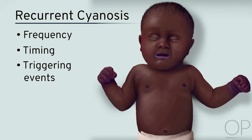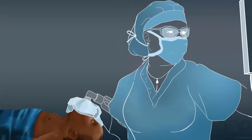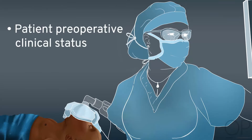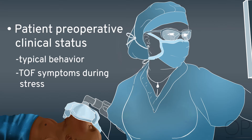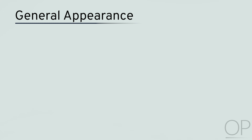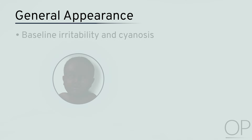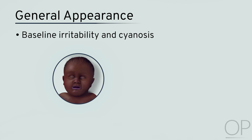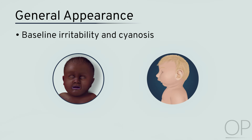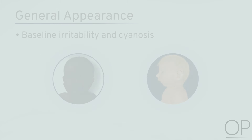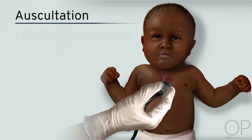Although echocardiography will provide the most comprehensive information about the nature of the cardiac defect, the anesthesiologist will need a clear picture of the preoperative clinical status of the patient, including typical behavior and Tetralogy of Fallot symptoms during stress and pain. During the physical examination, the general appearance should be assessed in regards to baseline irritability and obvious cyanosis. The facial features have to be carefully examined for any evidence of syndrome or potential difficult intubation.